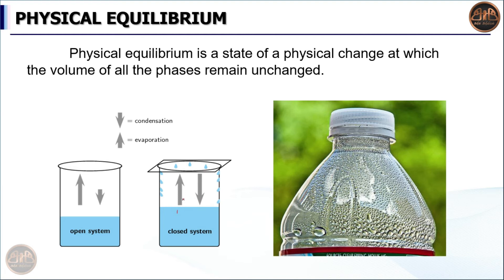In a certain state, the evaporation speed and condensation speed become equal. Both reactions balance each other, so the volume of all the phases — liquid and gas — remains constant.